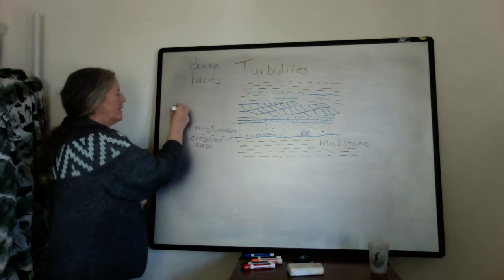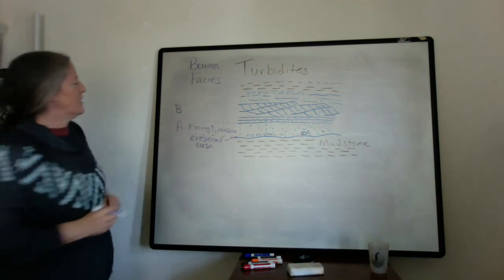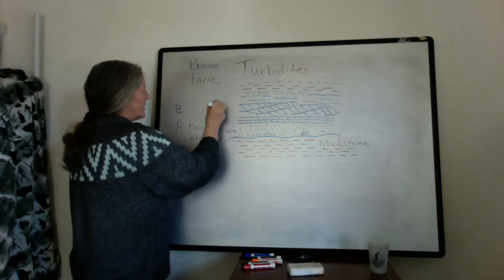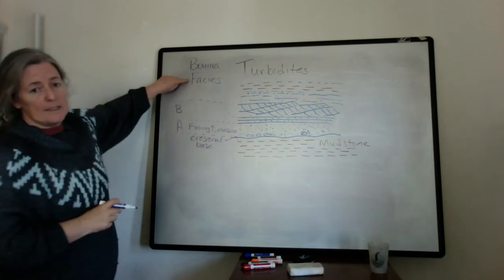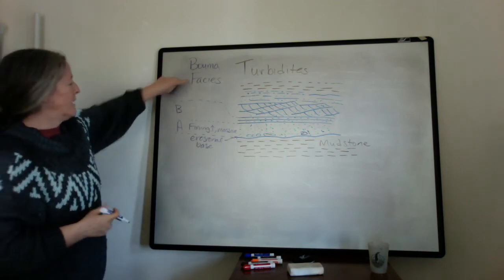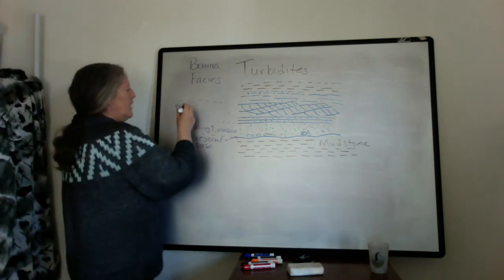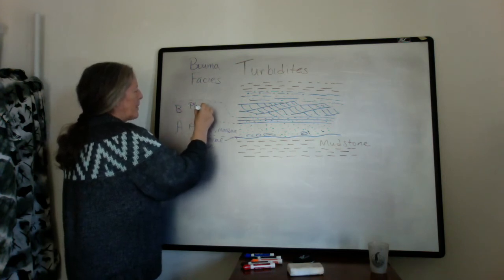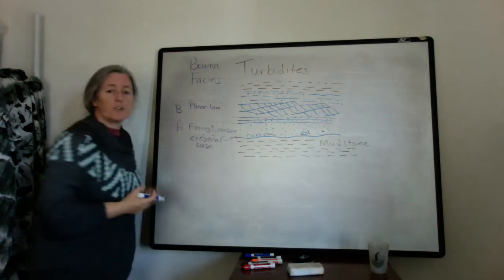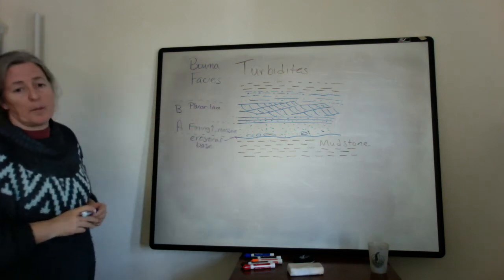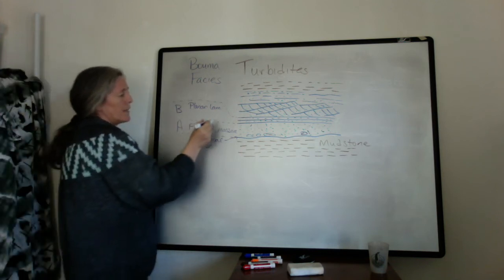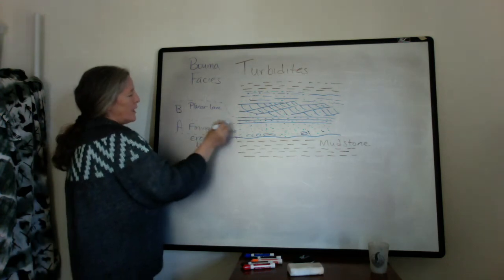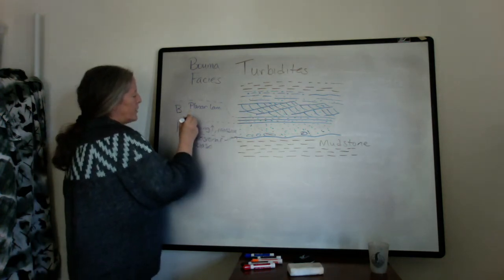B represents the component where you have a change in sedimentary structures. Bouma defined his facies on both grain size and sedimentary structure. This one is primarily planar laminated, and his interpretation is that it's an upper planar lamination. It can be fining upward, may or may not be, but it usually has an abrupt change at the bottom.